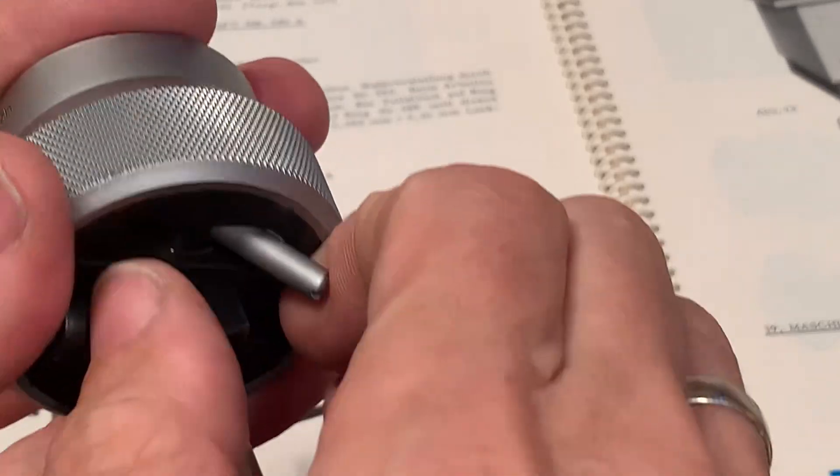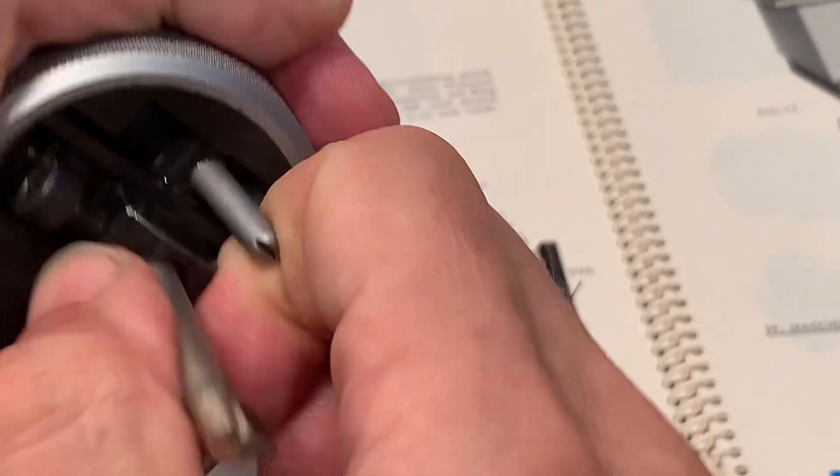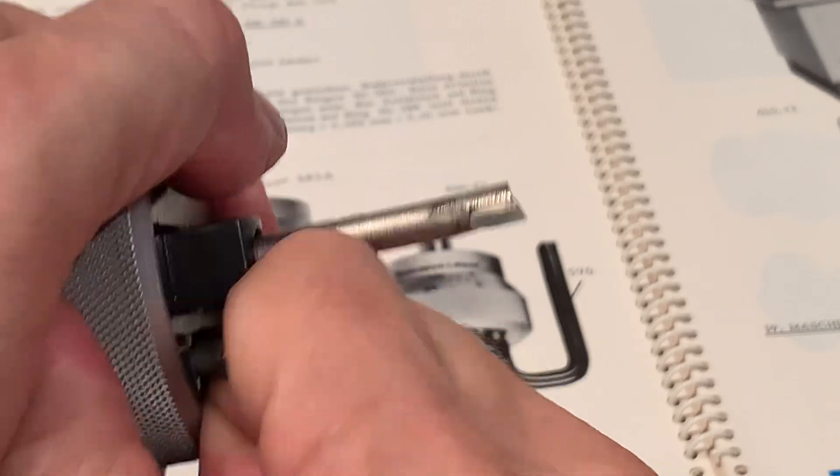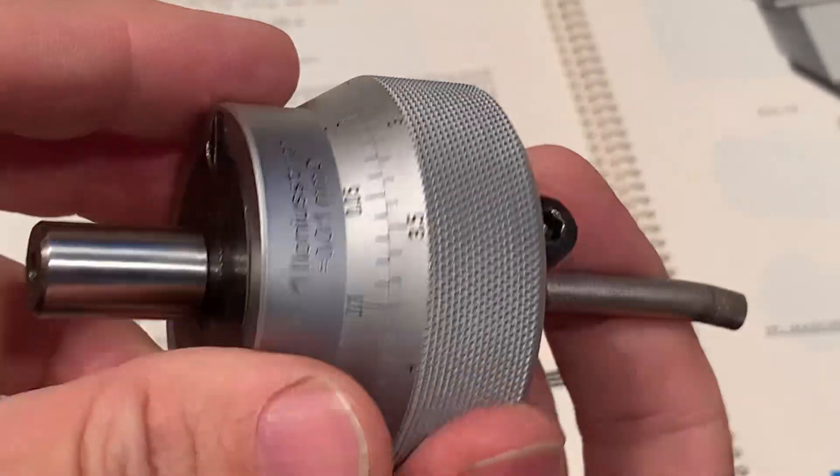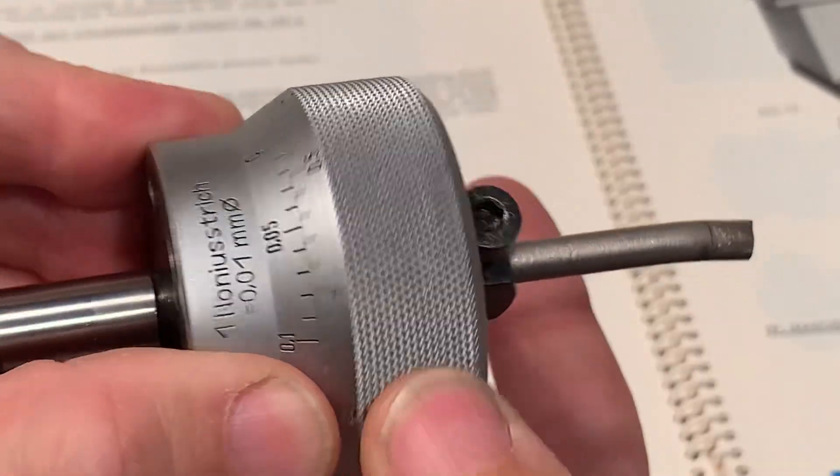So here's the handle, and you can block it in place and unlock it. And then it's possible to make this fine adjustment here.